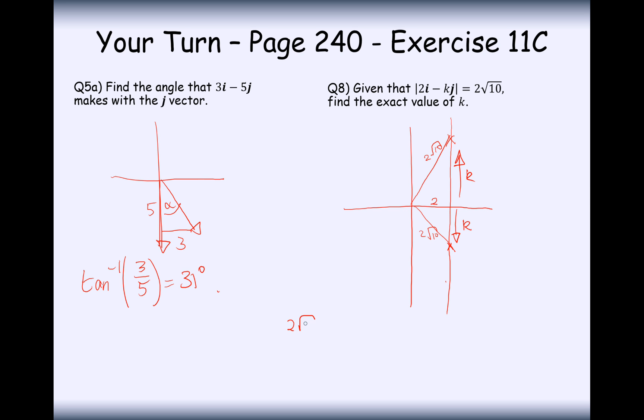2 root 10 is on the hypotenuse, so it's 2 root 10 squared take away 2 squared, and that will give us our height, so that would be k squared. This here is going to be 40 take away 2 squared, it's 4, which is equal to 36, which is equal to k squared. So k here is going to be equal plus or minus 6.